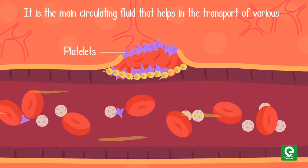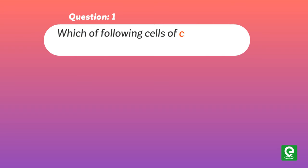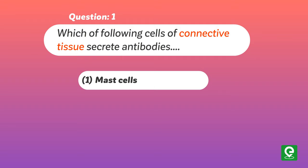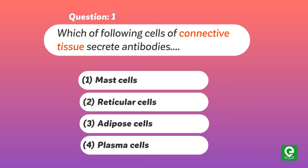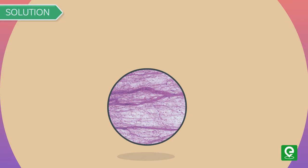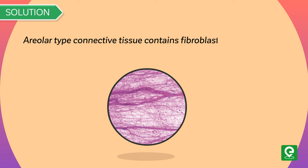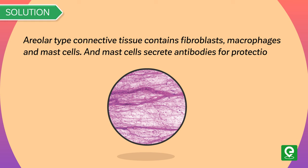Blood is the main circulating fluid that helps in the transport of various substances. Question 1: Which of the following cells of connective tissue secrete antibodies? 1) Mast cells, 2) Reticular cells, 3) Adipose cells, 4) Plasma cells. This question was asked in CPMD 2005. Solution: Areolar type connective tissue contains fibroblasts, macrophages, and mast cells. Mast cells secrete antibodies for protection of the body. Hence, option 1 is correct.